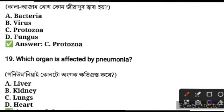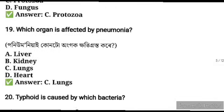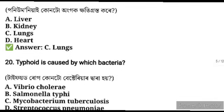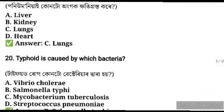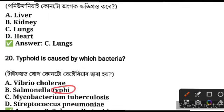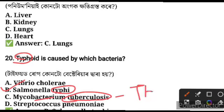Which organ is affected by pneumonia? Pneumonia affects the lungs. Typhoid is caused by which bacteria? Typhoid is caused by Salmonella typhi. Tuberculosis is caused by Mycobacterium tuberculosis.